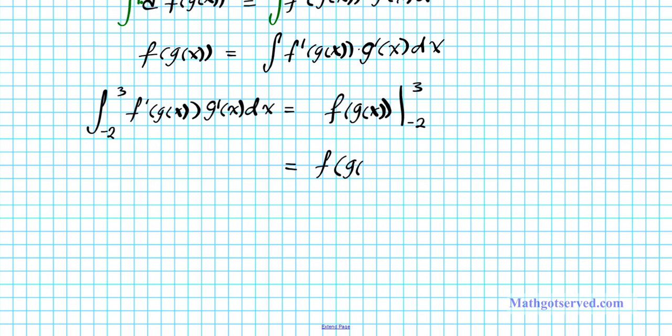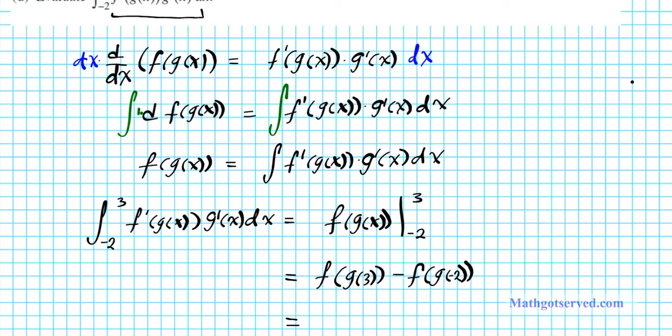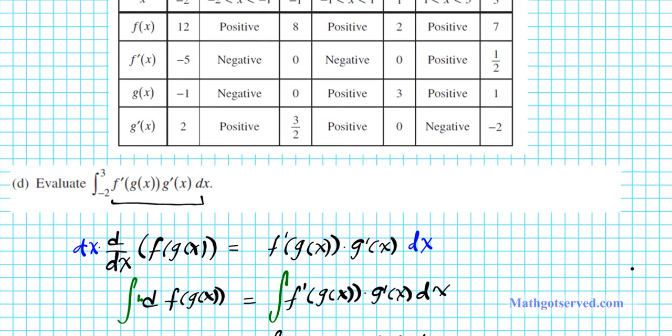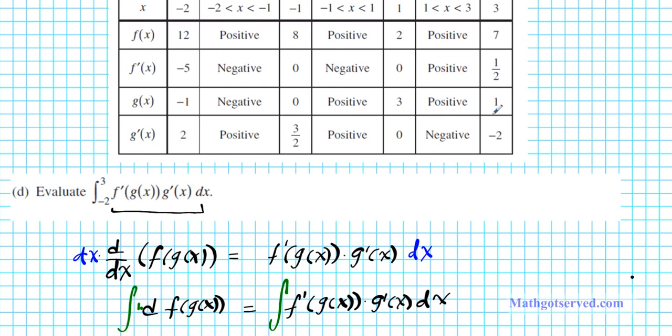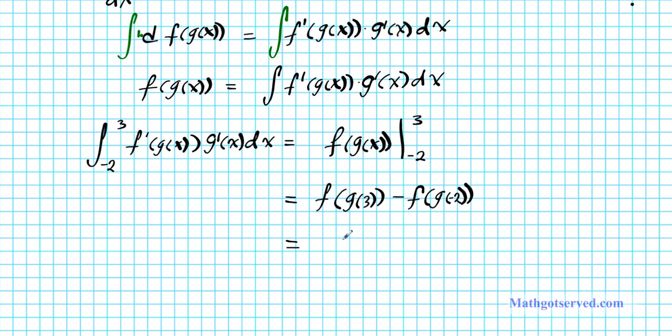We have f of g of 3 minus f of g of negative 2. So we're going to be making use of the f and the g rows in computing the value of this expression. We have to find g of 3 and g of negative 2 first. g of 3 is 1, g of negative 2 is negative 1, so we're going to plug that in first. We're going to have f of 1 minus f of negative 1.